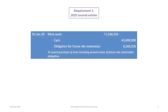Now we can record our journal entry. At January 1st, we will debit the mine asset for $71,568,356 — the total capitalized value we just calculated. We will credit cash for the $65 million paid to acquire the mine, and credit a long-term liability account — obligation for future site restoration — for $6,568,356. This records the purchase of the mine including the present value of the future site restoration obligation.